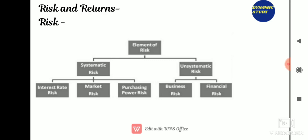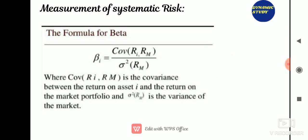Systematic risk is due to the dynamic nature of society — changes in economic, political, and social systems. These changes influence the performance of companies and thereby their stock prices. For example, economic and political instability adversely affects all industries and companies. Unsystematic risk arises because the return from a security may vary due to certain factors particular to that company. Variability in the return of a security on account of these factors is known as unsystematic risk.